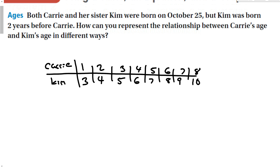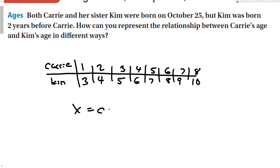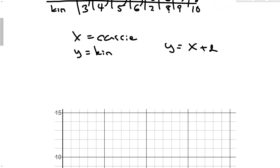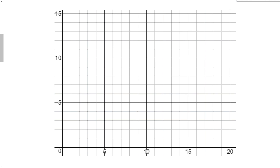Now let's write an equation. Let x equal Carrie's age and y equal Kim's age. Looking at the table, to get Kim's age I take Carrie's age and add 2, so the equation is y = x + 2. This relationship can also be represented with a graph — it will be a linear function.